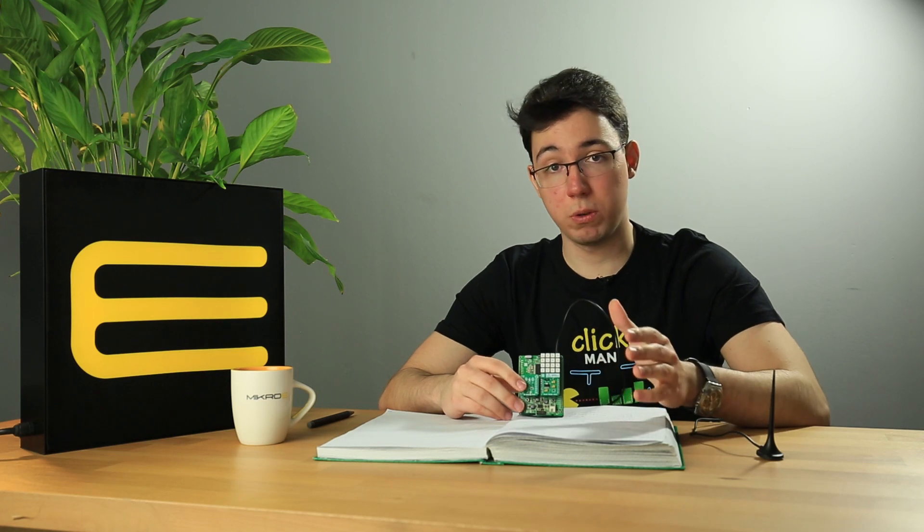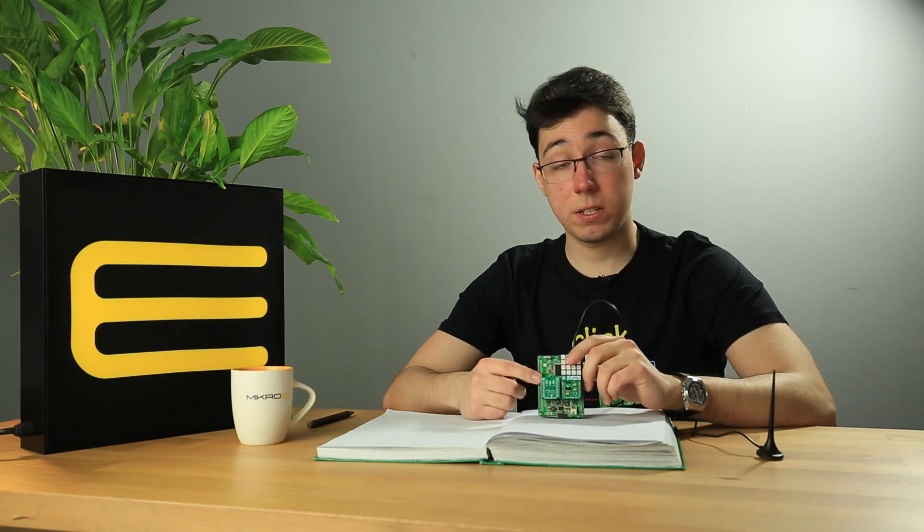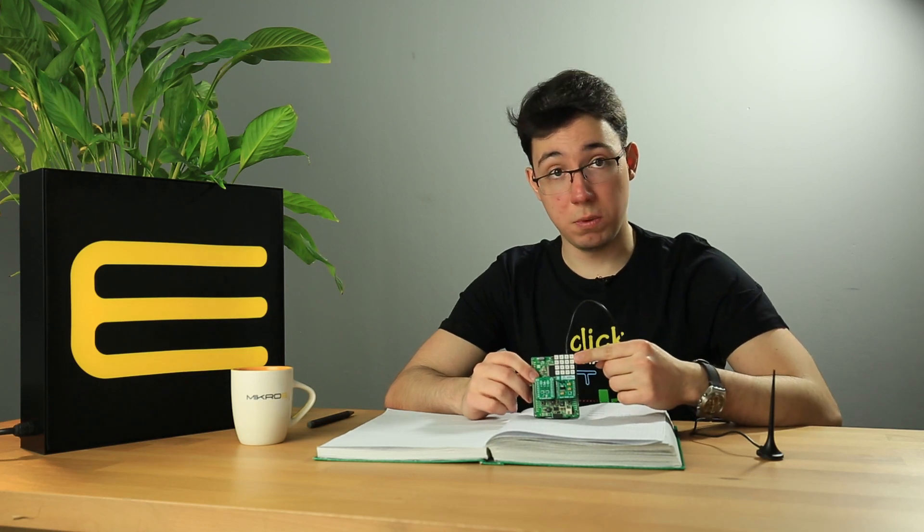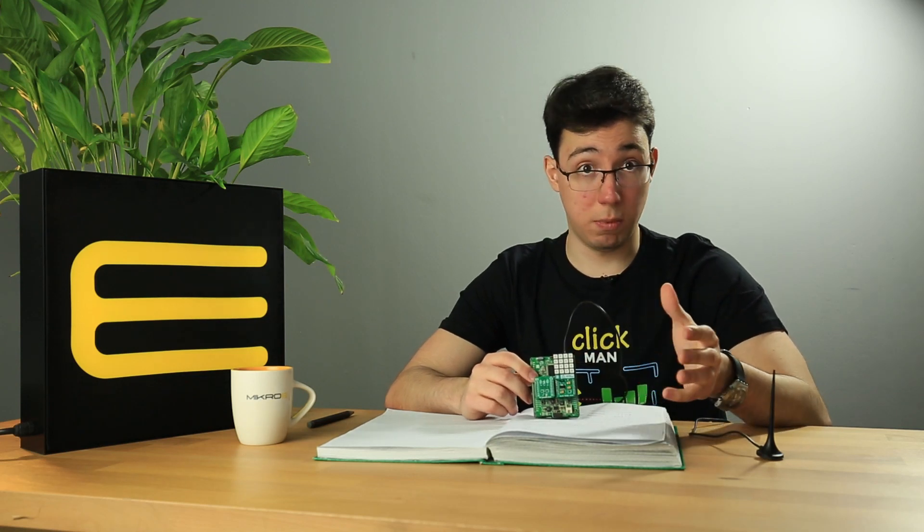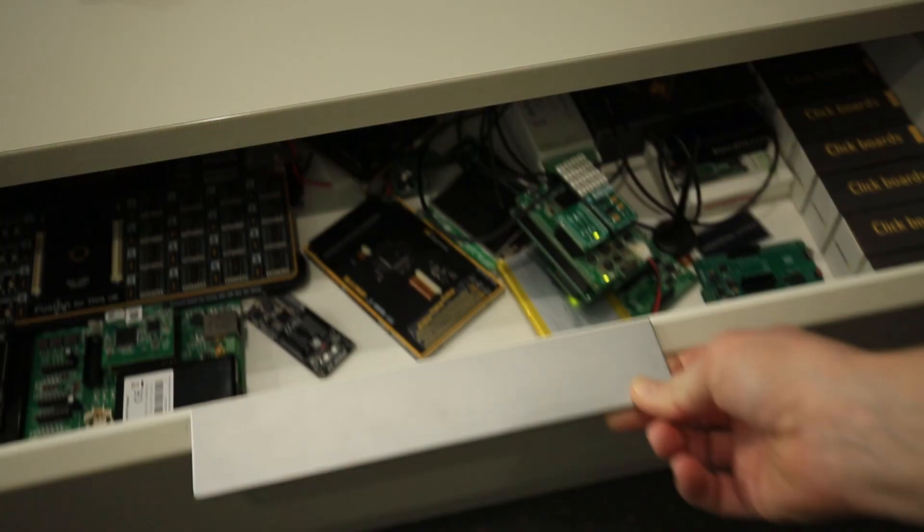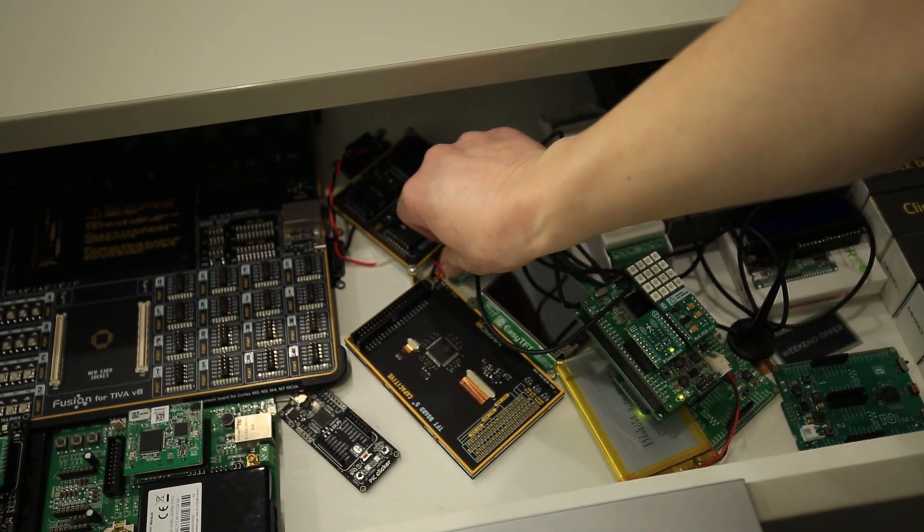Now let's go through the whole process again. IR Sense 3 senses the intruder. 4x4 RGB flashes blinding lights. Buzzer creates that spine-chilling frequency and GSM notifies the user.